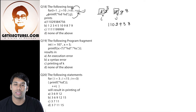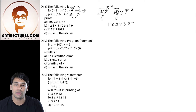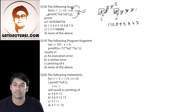It will increment the value of i. So the value of i becomes 4 and the value of j becomes 7. 4 is less than 6, therefore it will print 4 and 7. Again it will increment the value of i. Therefore the value of i becomes 5 and the value of j becomes 6. 5 is less than 6, therefore it will print 5 and 6.